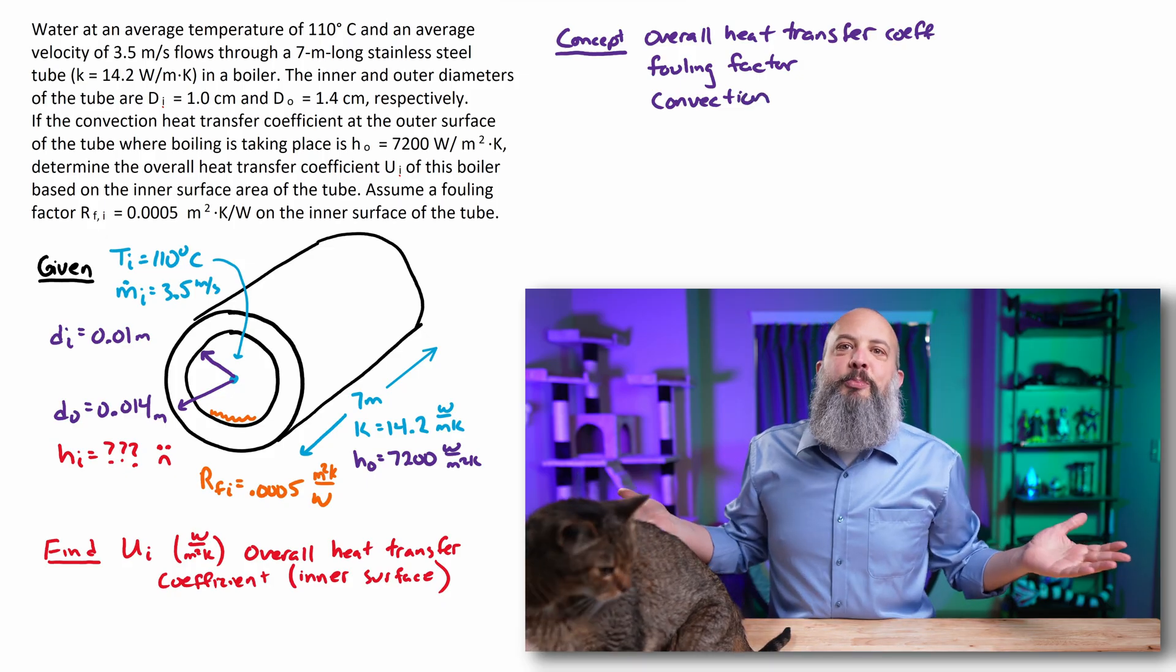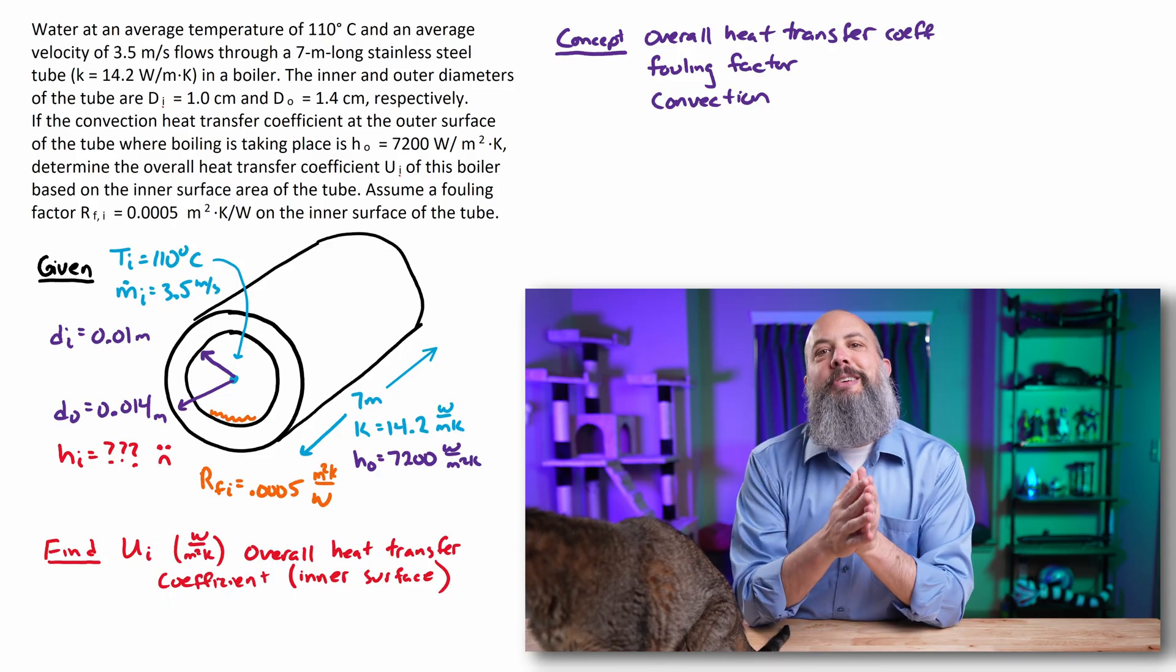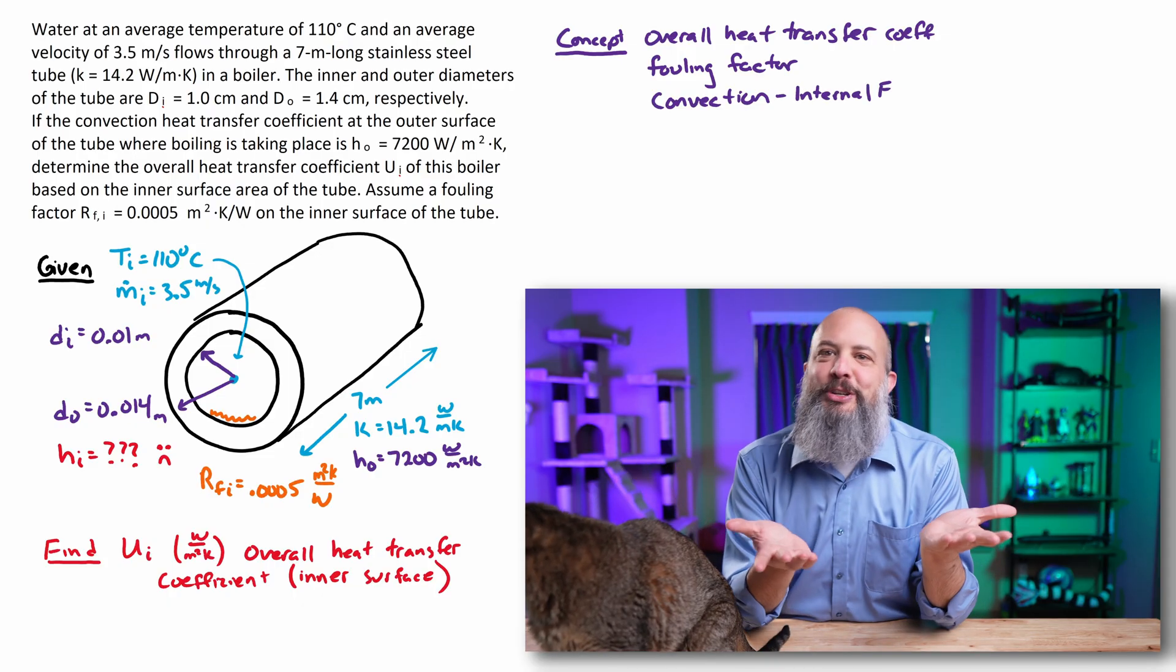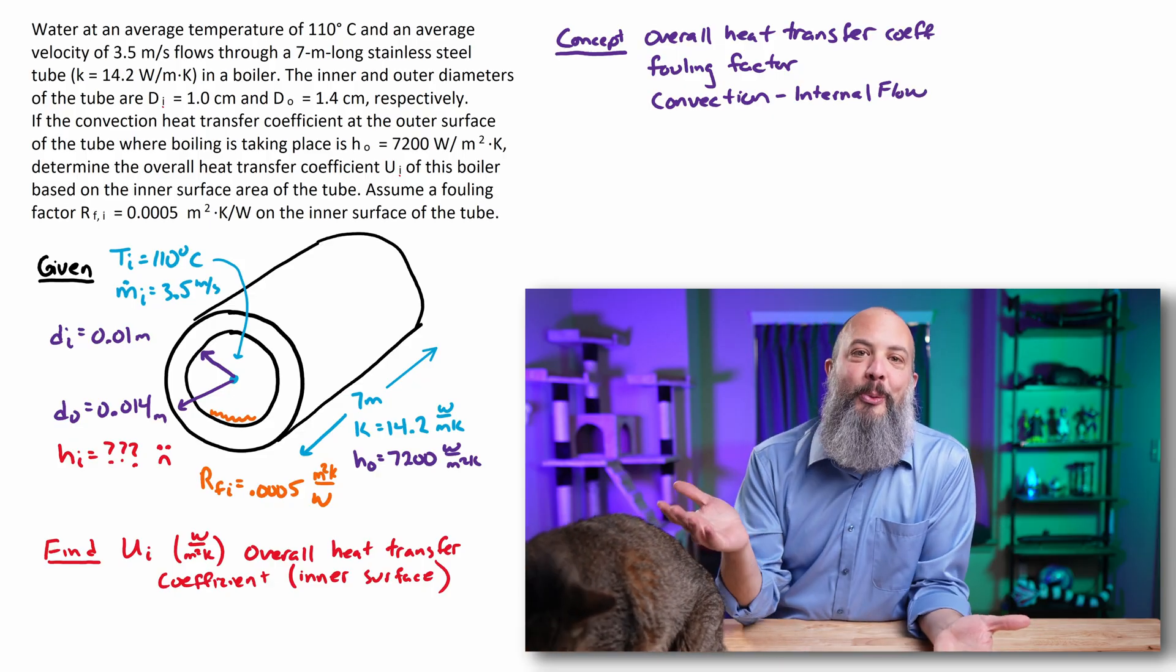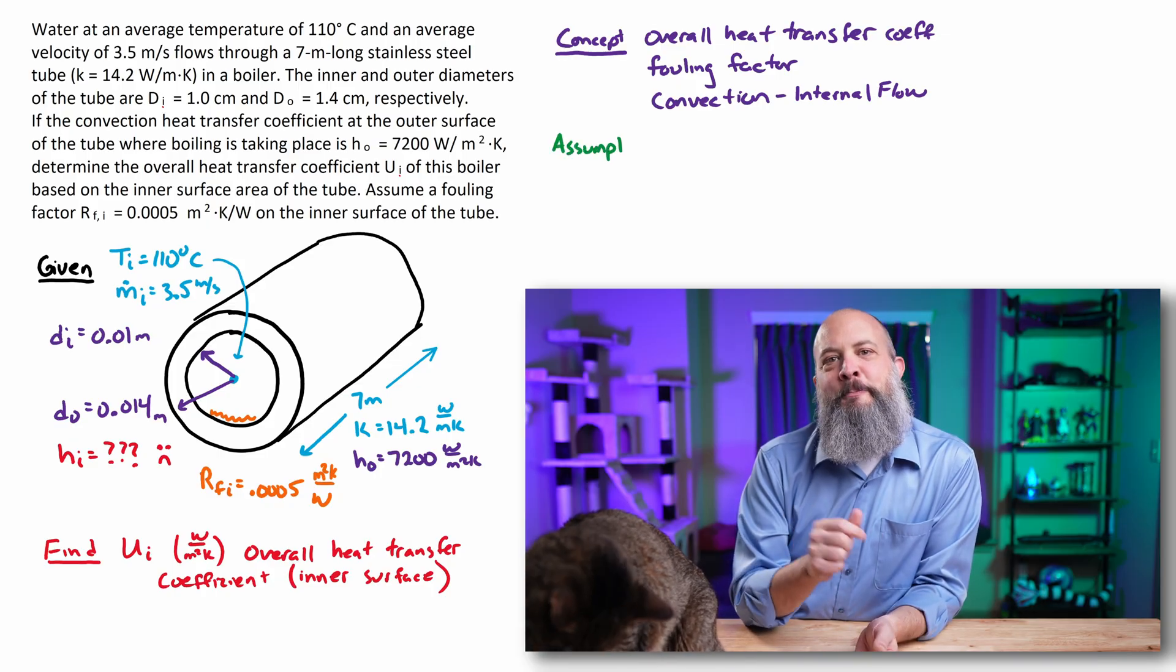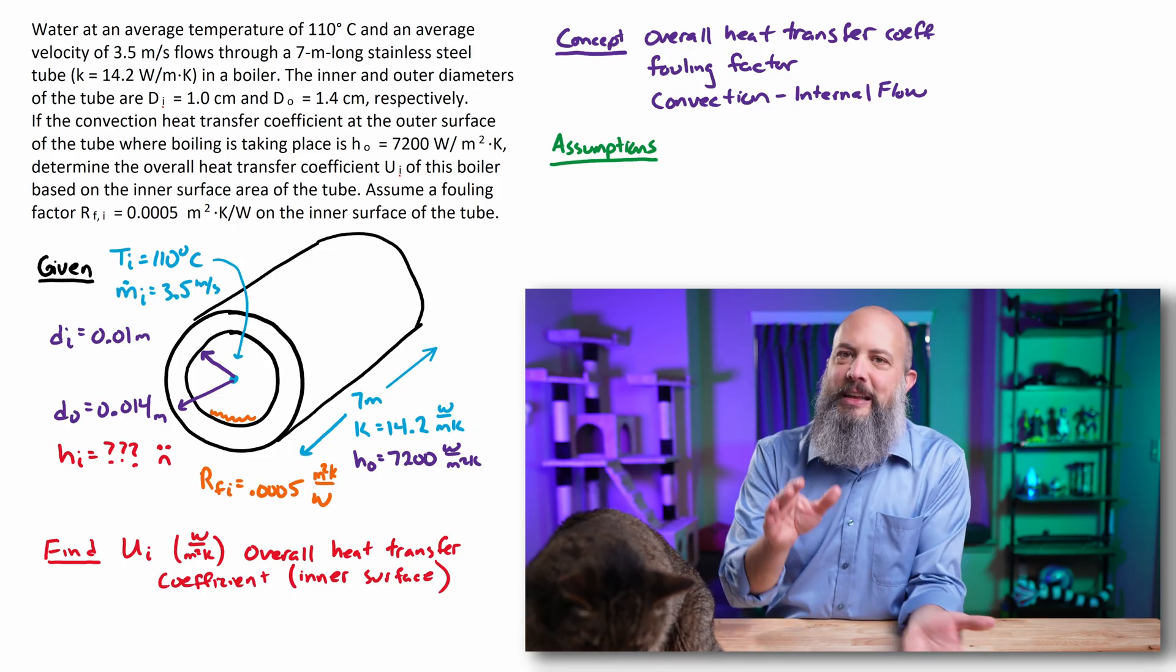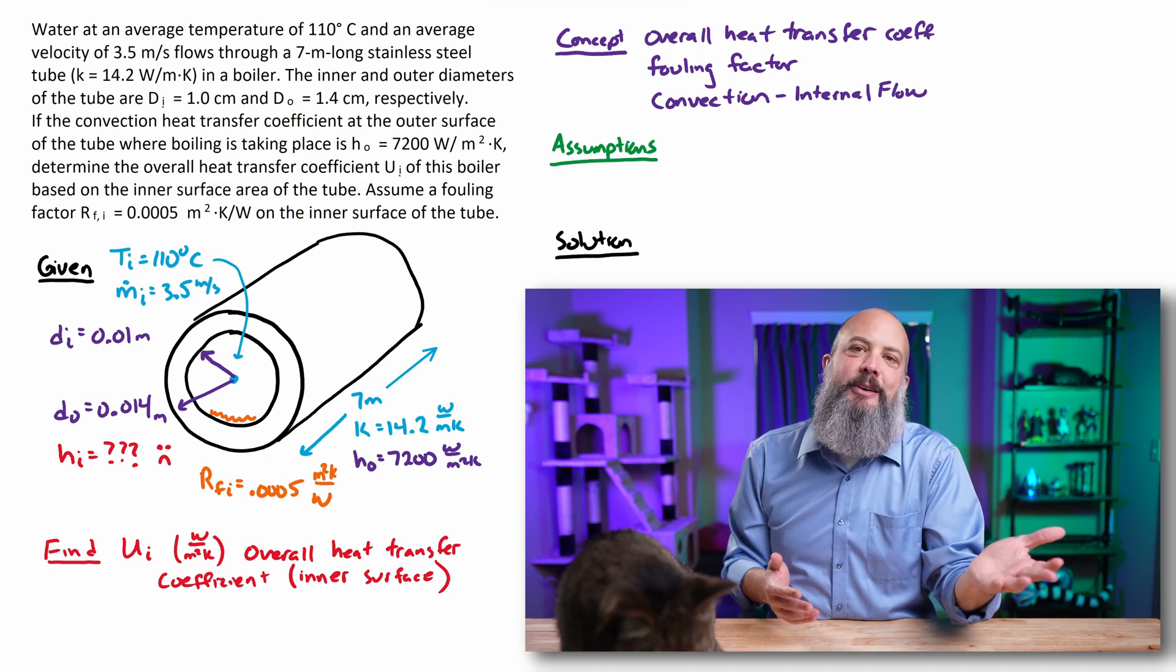The concept for this problem is the overall heat transfer coefficient and also fouling factor. Unfortunately, this is still going to be a convection problem. We are going to have to use internal flow equations to actually find some of the intermediate steps we need along the way. For assumptions, I'm going to leave a blank space here so that every time I make an assumption, I'm going to come back and write that down.